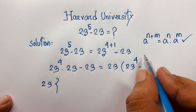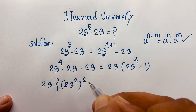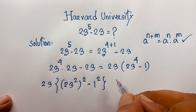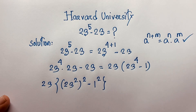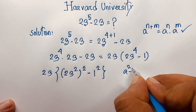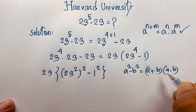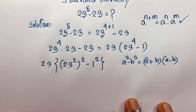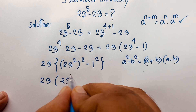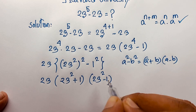Now 23 to the power 4 can be written as (23 to the power 2) to the power 2, since 2 times 2 equals 4. So we have 23 times ((23²)² minus 1²). I apply the difference of squares formula: a² minus b² equals (a plus b)(a minus b). Applying this formula, the expression becomes 23 times (23² plus 1)(23² minus 1).